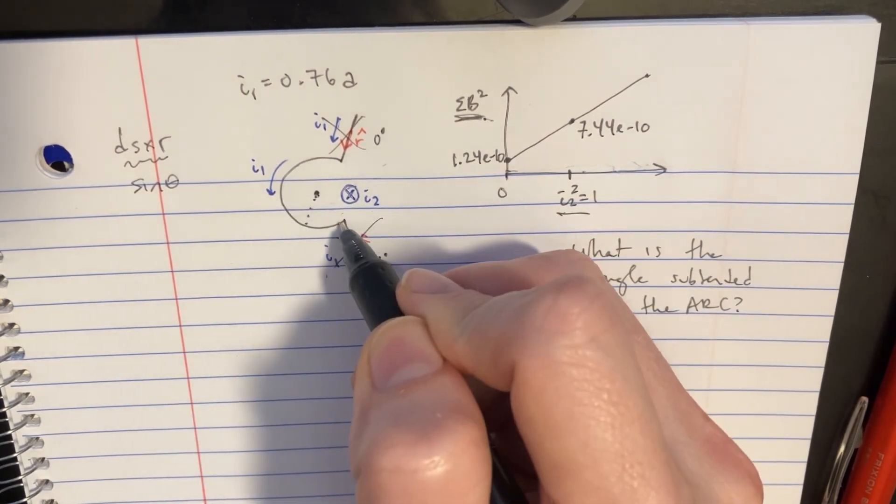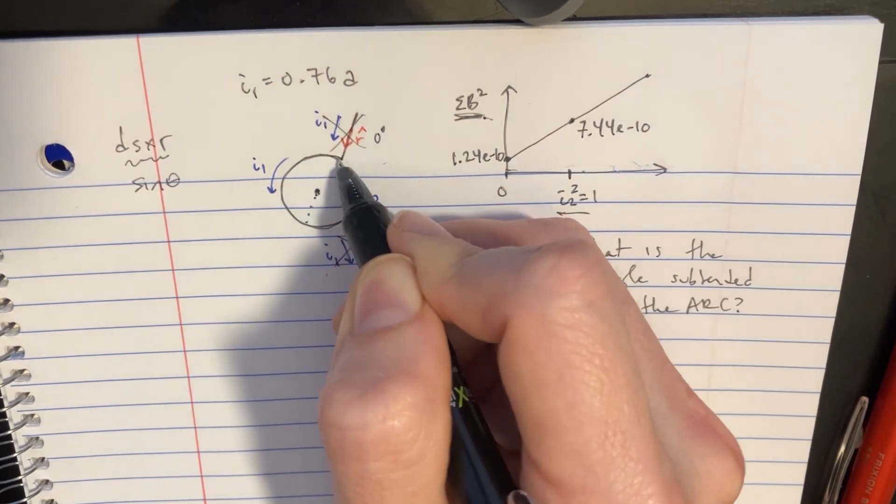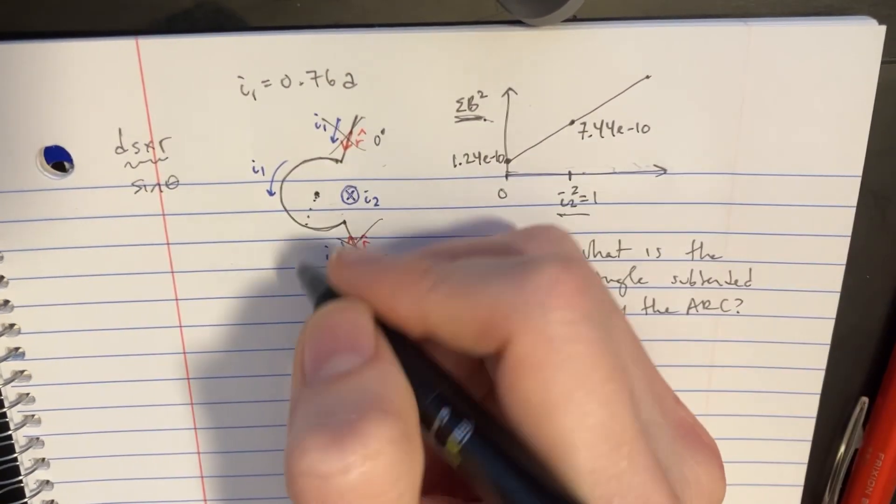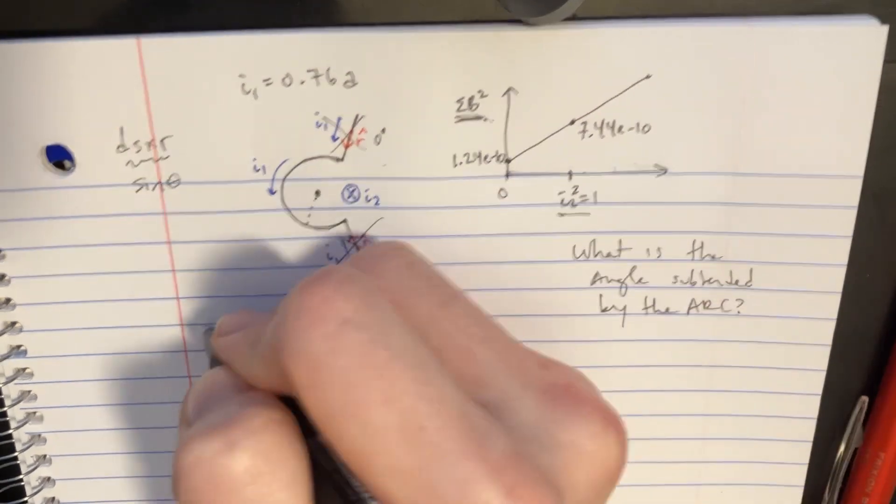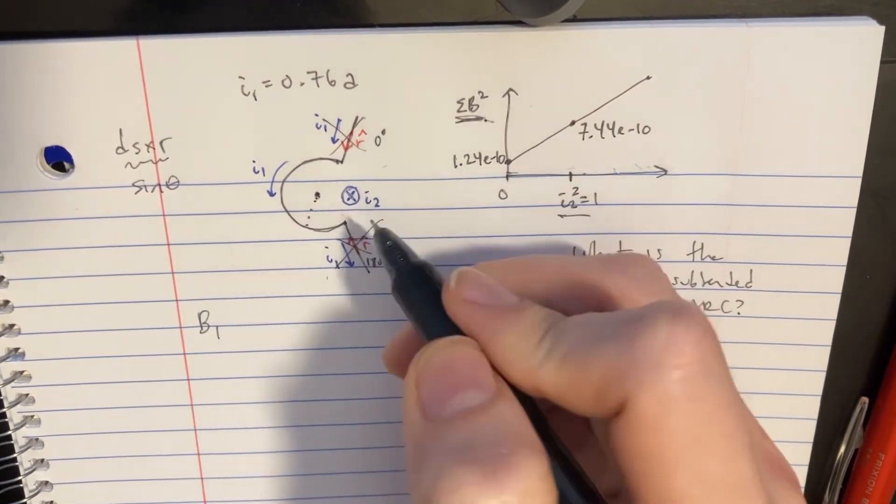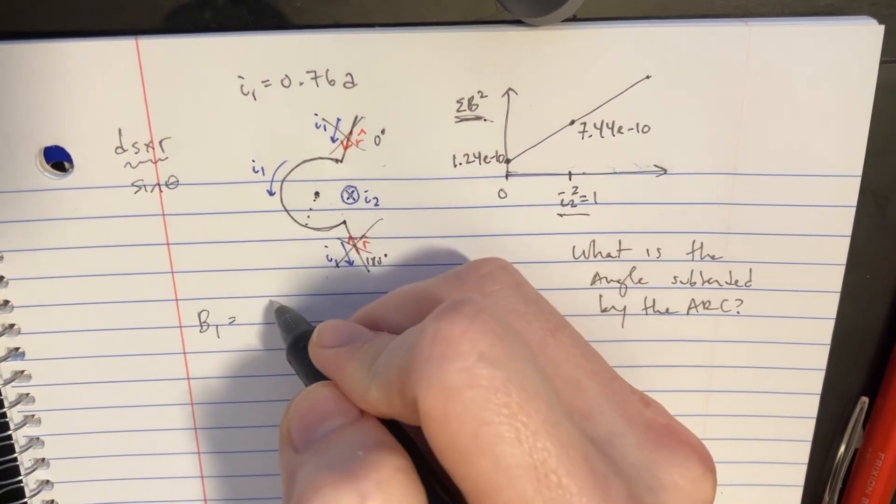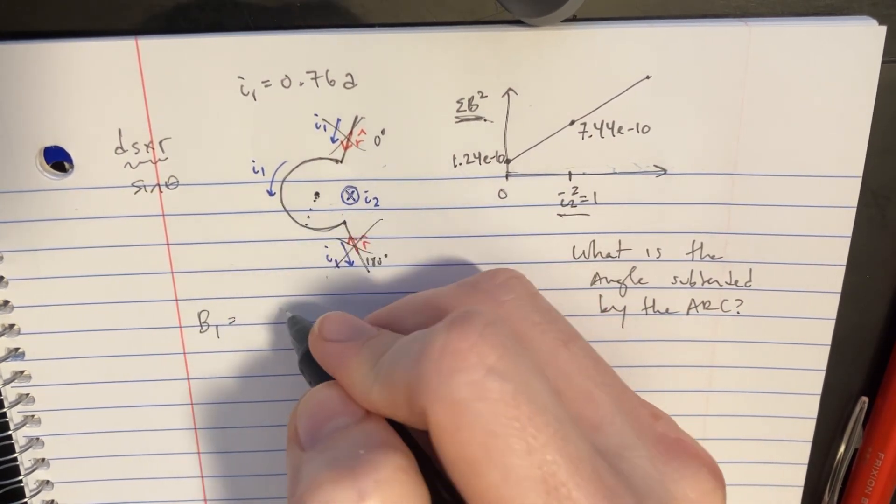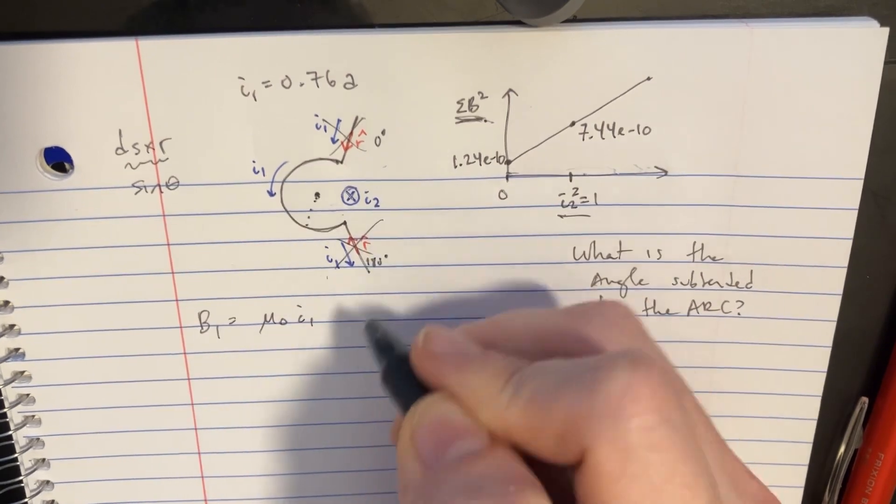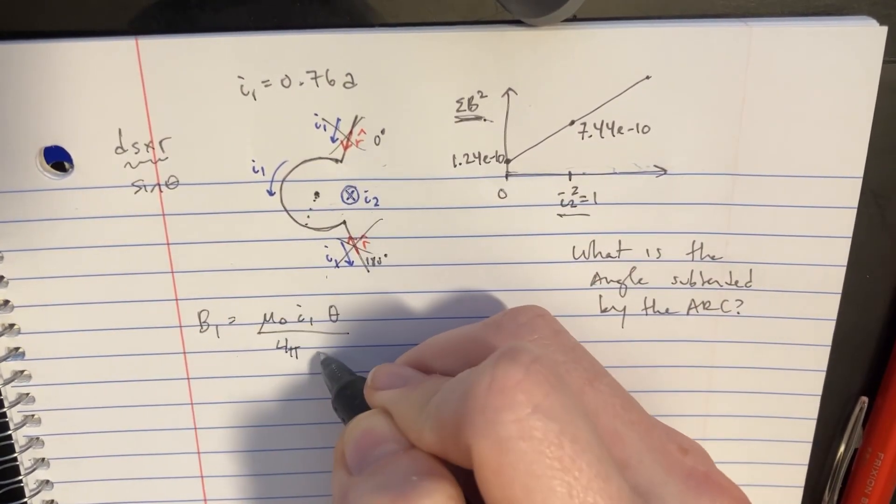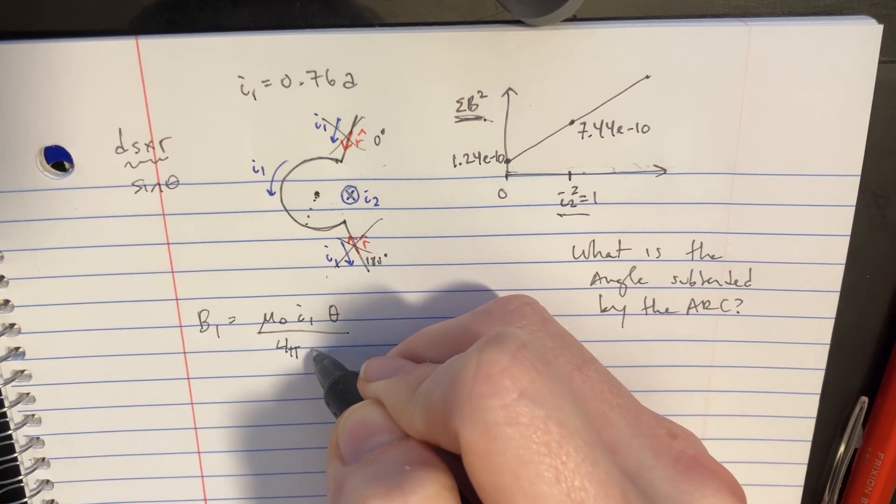Let's focus now on this arch that we have here. We actually have a simple formula that we can use. We've derived this before that for the center of an arc, we can use this formula. I will call it B1 because it's from current one. And we'll just say that is mu naught I1. We need the theta. And we're going to be looking at 4 pi times the R.